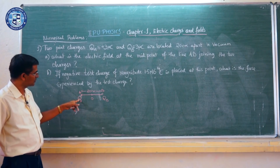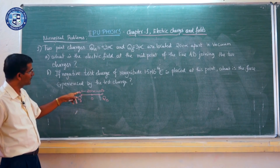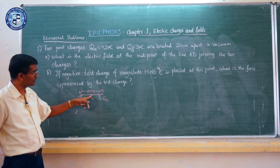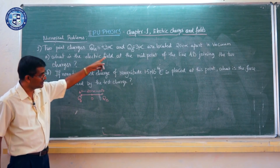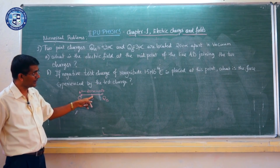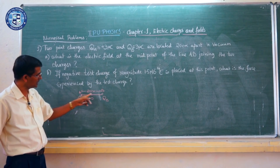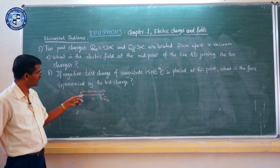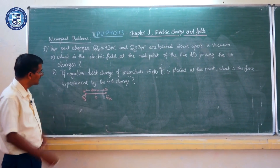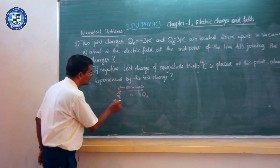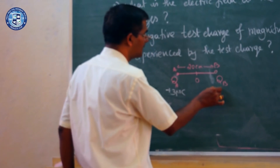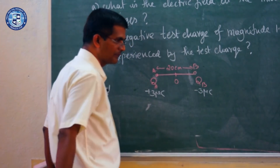We have two charges QA and QB separated by a distance of 20 centimeters. I have to find the electric field at the midpoint O of the line joining AB. This midpoint O is at a distance of 10 centimeters from both A and B. Charge A has +3 microcoulombs and charge B has -3 microcoulombs.